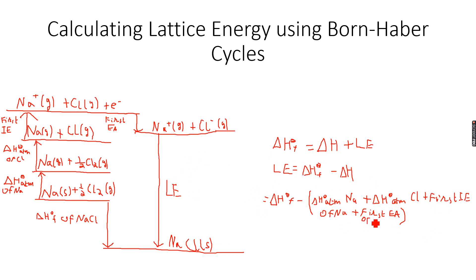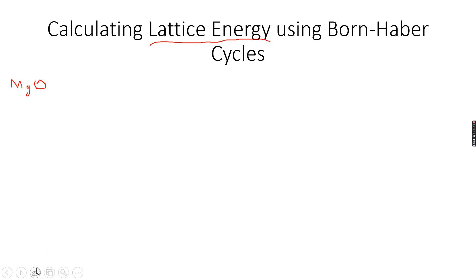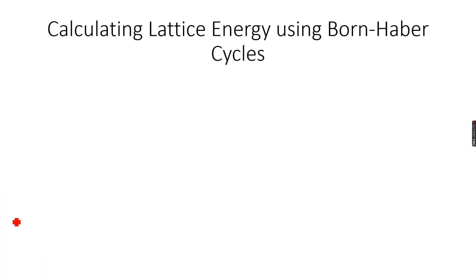We have done this. Now let's do another example. This time we have MgO — magnesium oxide — and we have to calculate the lattice energy of magnesium oxide. First, we will make a line starting from the elements. Always start from the elements: Mg solid.